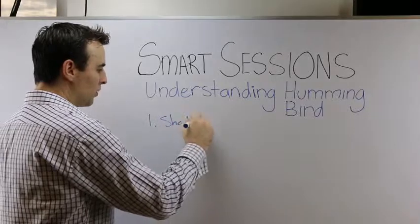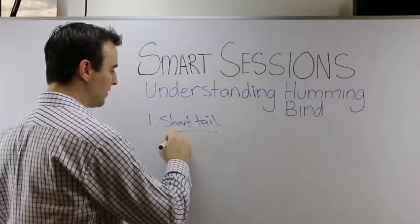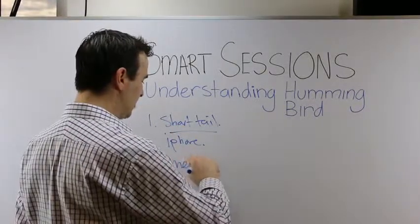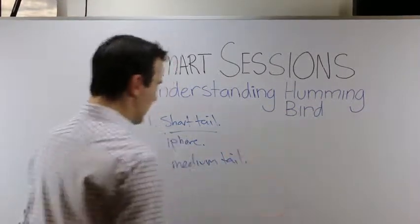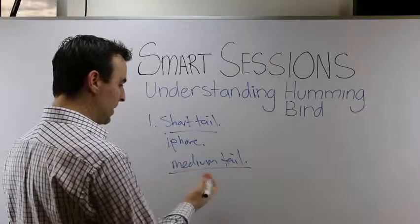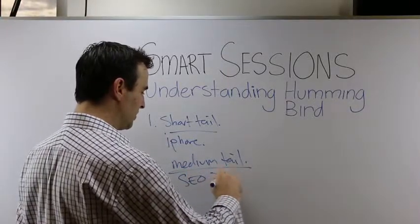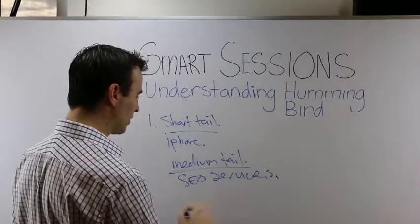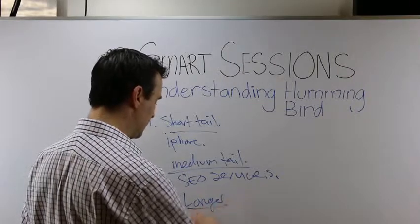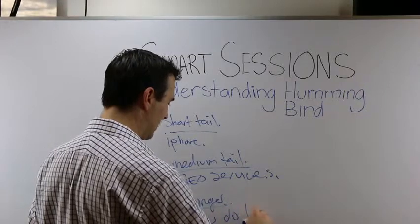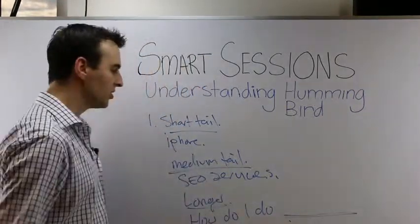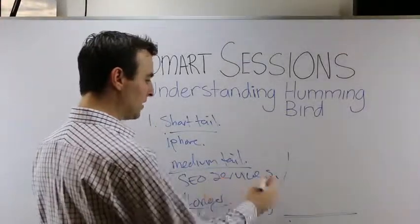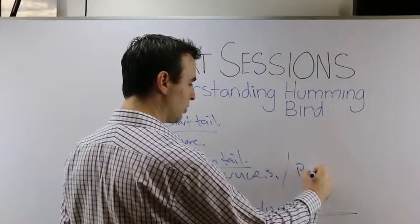First are your short-tail key terms — your head key terms — an example being 'iPhone.' Then you've got your medium-tail key terms, which could be a more services-based key term, something like 'SEO services.' And then you've got your longer-tail key terms — the more 'how do I do something' type searches. You want to make sure your business and content is addressing all three of these.